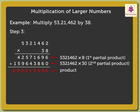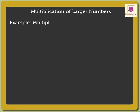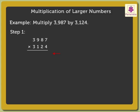Let us solve one more example. Let us multiply 3,987 by 3,124. We can divide the whole process into 5 steps. As you know, we begin by multiplying 3,987 by the ones digit of the multiplier, that is 4.